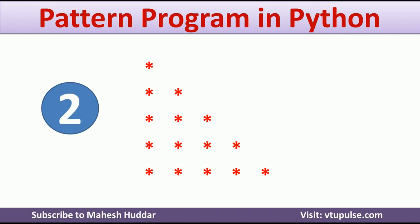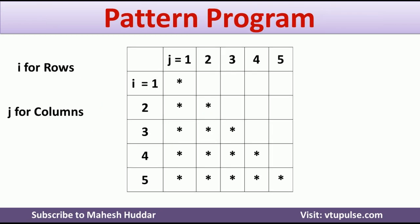Before we draw any pattern program, we need to understand the logic to draw that particular pattern. I will represent this pattern in the form of rows and columns. Here we have 5 rows and 5 columns. We need to use 2 loops to draw this pattern — one loop will handle the rows and one more loop will handle the columns.